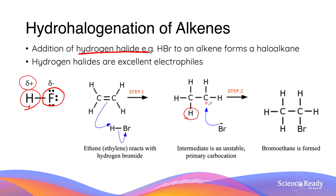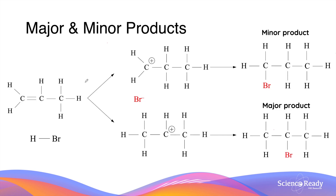However, the carbon atom does not stay positively charged for long, as a negatively charged halogen atom is attracted and therefore added to it, which forms the final product of the reaction — a haloalkane. That is an alkane molecule with a halogen atom attached to it.